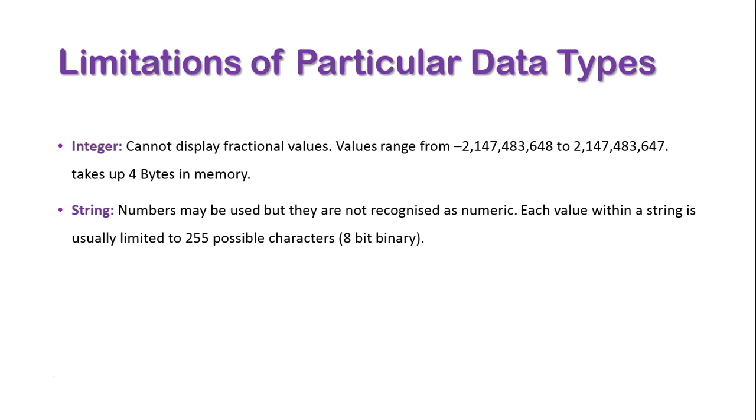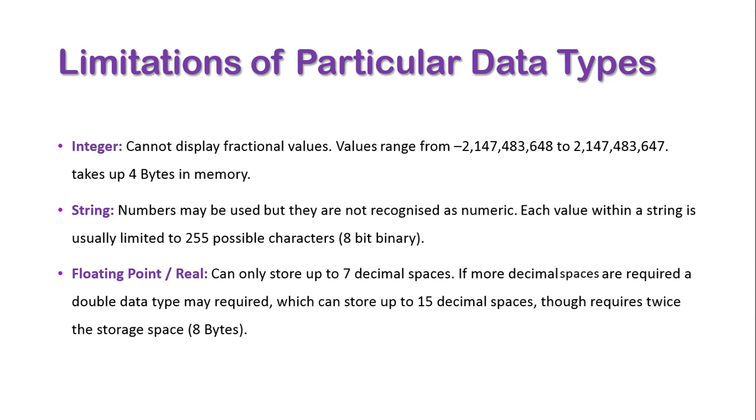A floating point can only store up to seven decimal spaces. If more decimal spaces are required, a double data type may be used. This can store up to 15 decimal spaces but requires twice as much storage space. In this case, it's eight bytes for a double.